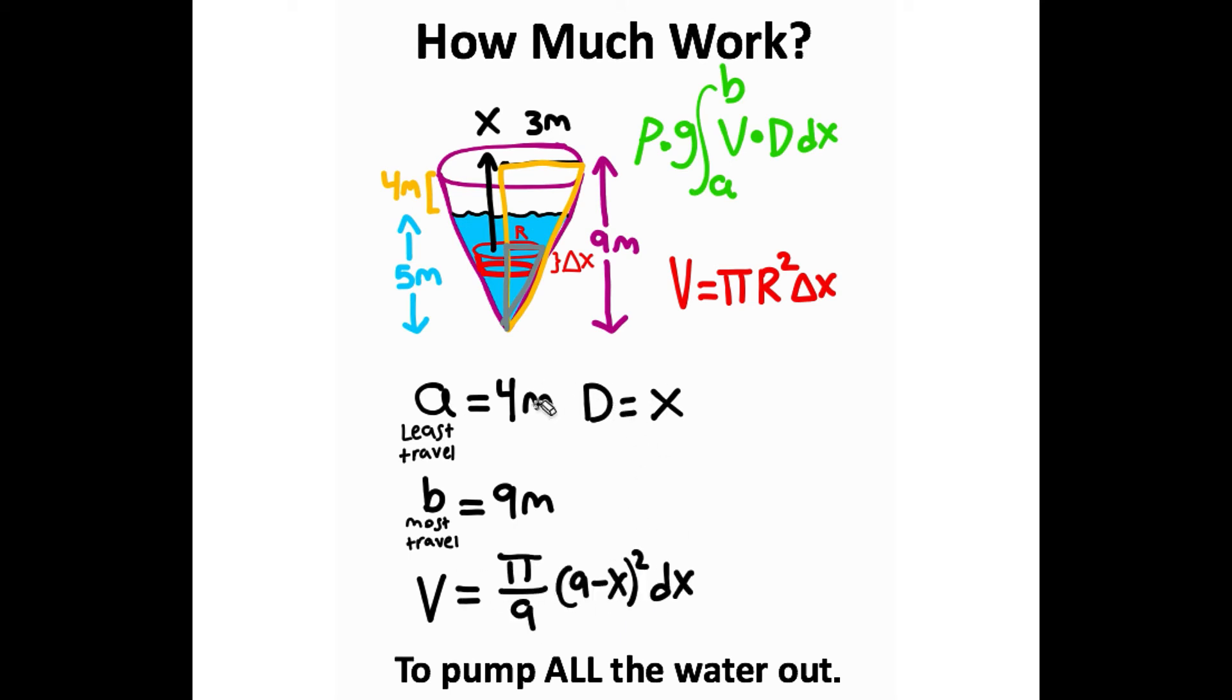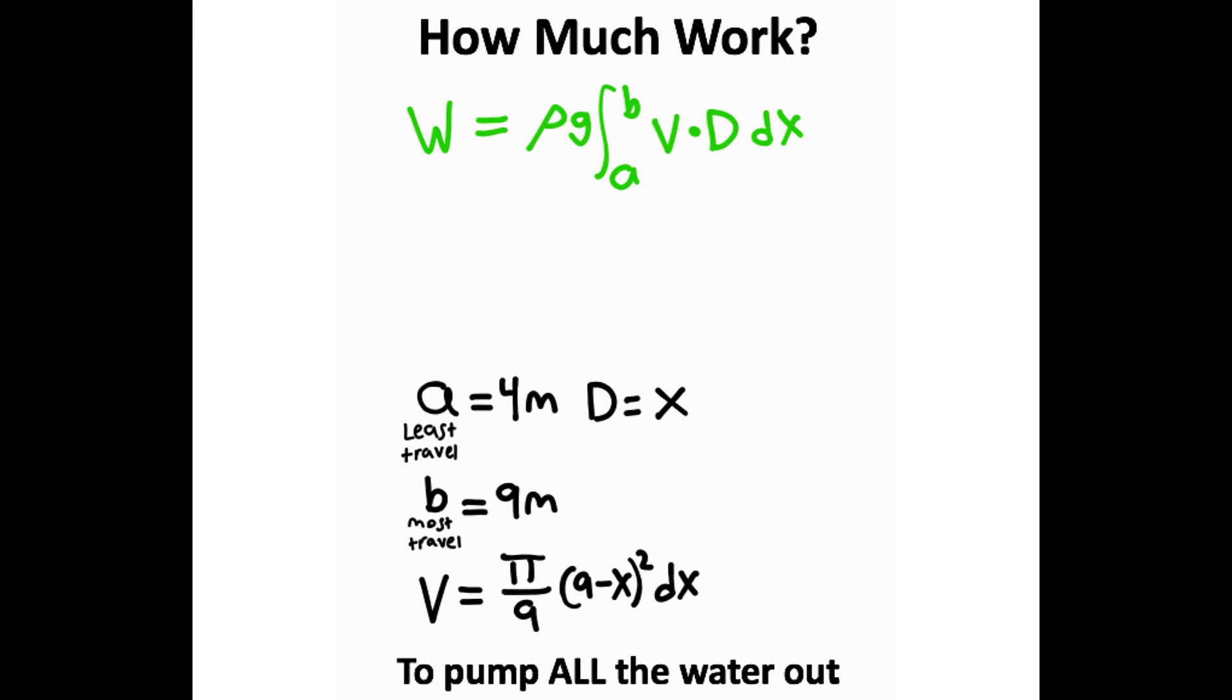Now we have all of our variables. We just need to plug it into this equation. Plugging everything in, we have the density of water, which is 1,000. We have gravitational acceleration on Earth, which is 9.8. We then have our integral. Our highest bound is going to be 9, because that's the farthest distance the water will travel in the cone. Our lowest bound is going to be 4, because that's the lowest distance the water will travel.